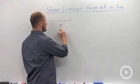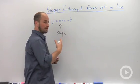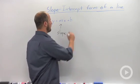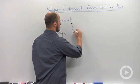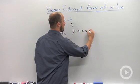m is referring to the slope or the steepness of the graph, and b is the y-intercept.